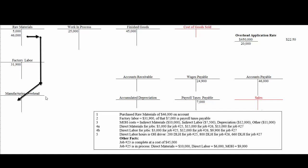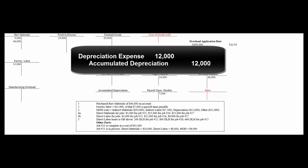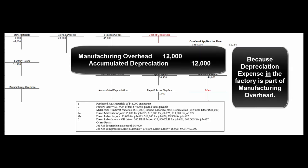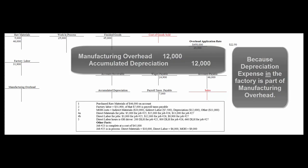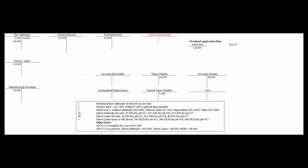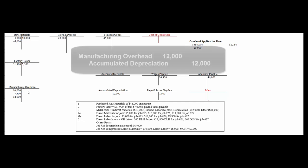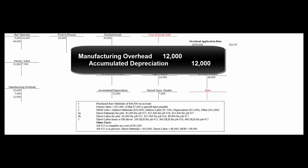Next, manufacturing overhead costs are incurred — these are debits to manufacturing overhead. Indirect materials of $10,000 come out of raw materials into overhead. Indirect labor of $7,500 comes out of factory labor into overhead. For depreciation, instead of debiting depreciation expense, we debit manufacturing overhead and credit accumulated depreciation. Other overhead costs of $11,000 — maybe factory utilities — are recorded as debit manufacturing overhead, credit accounts payable.